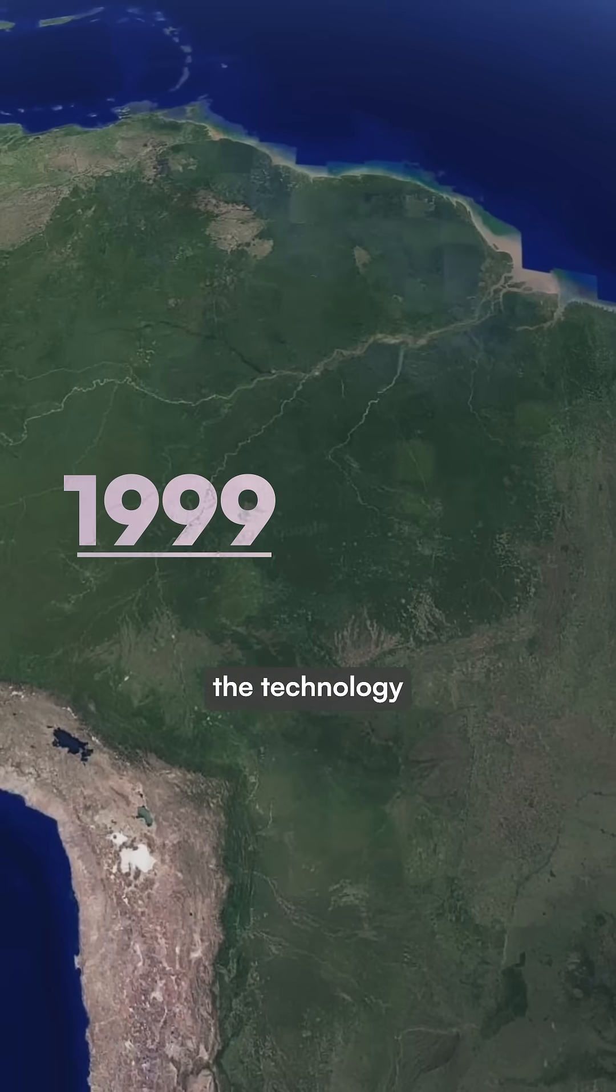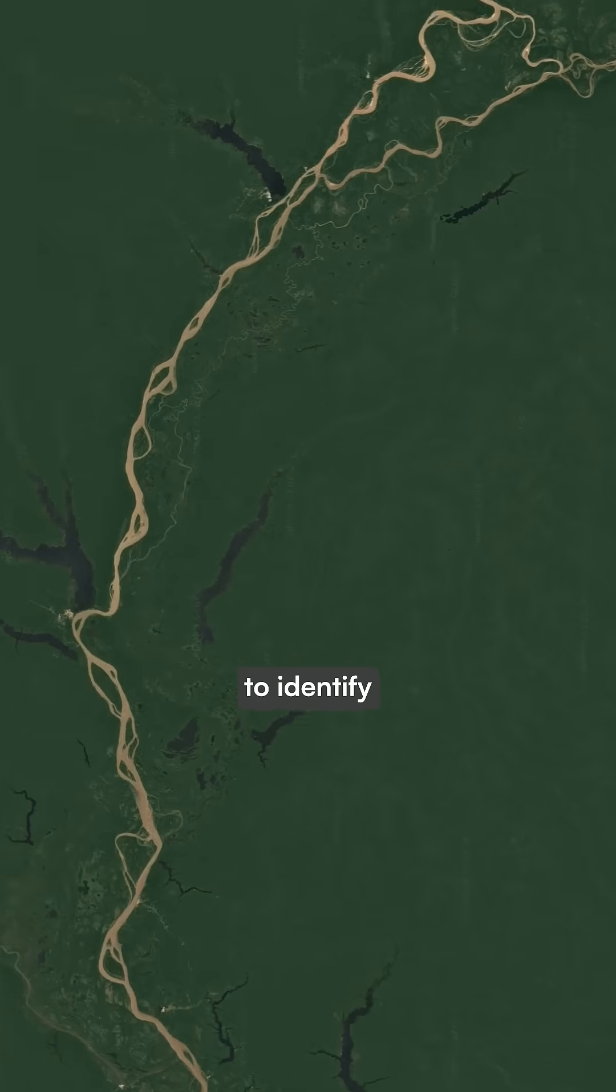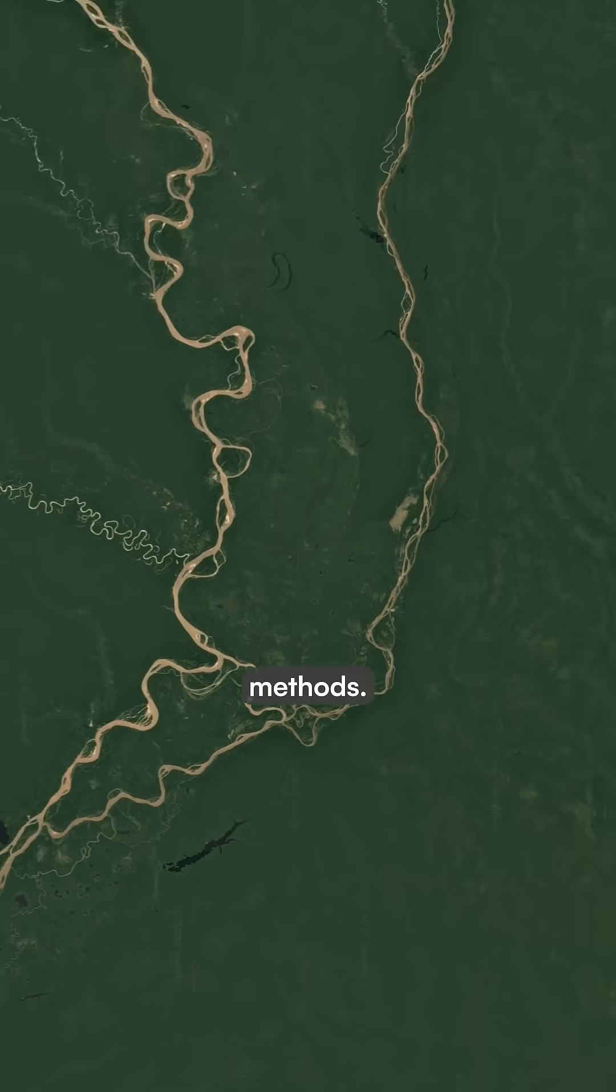In Brazil, researchers are using the technology to detect Amazon deforestation patterns that would take months to identify with traditional satellite methods.